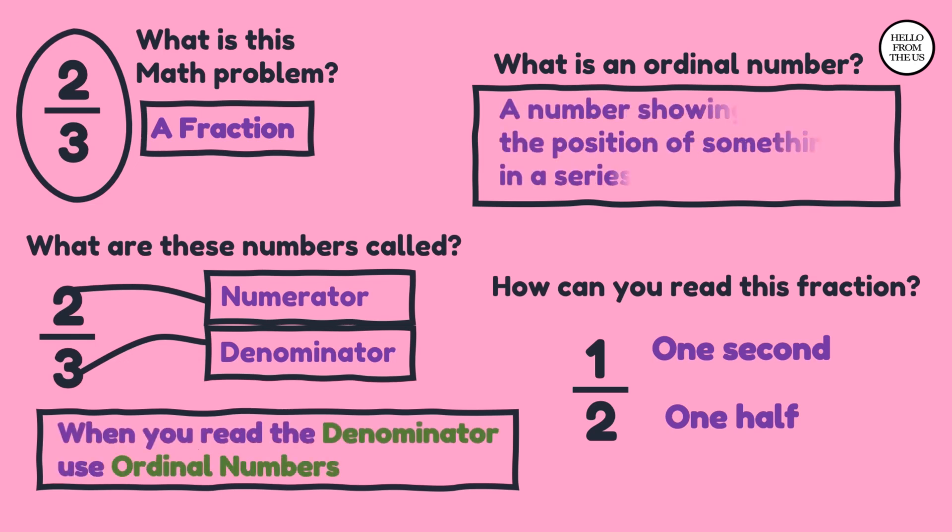When you read the denominator, you need to use ordinal numbers. What is an ordinal number? A number showing the position of something in a series.